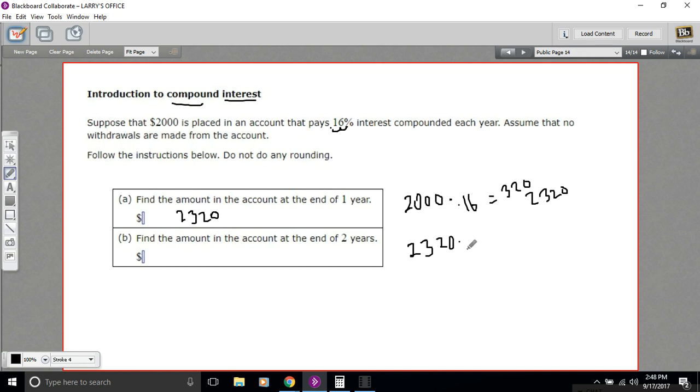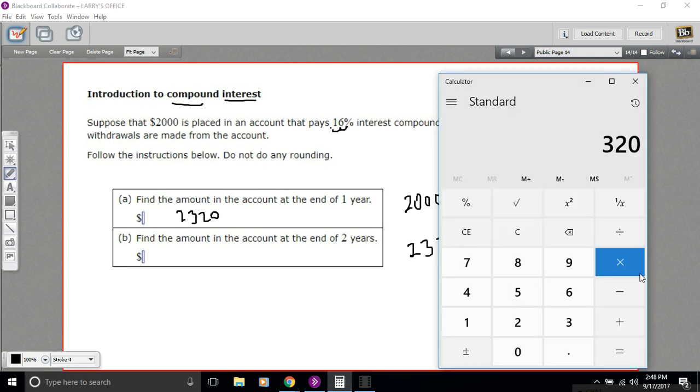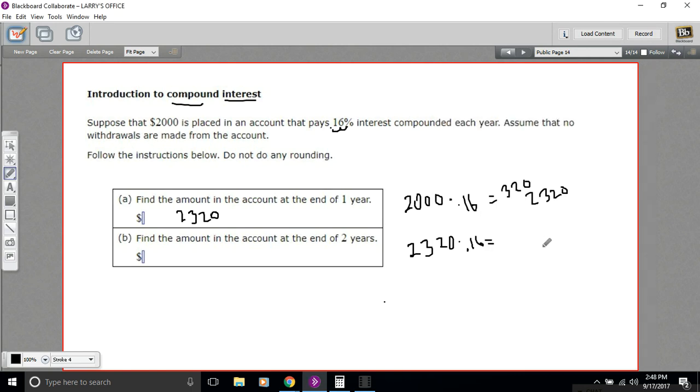It's the same calculation. We're going to multiply by 0.16. So let's pull up our calculator. So we'll multiply by 0.16 - that's $371.20. And we add that to our $2320, and we get...